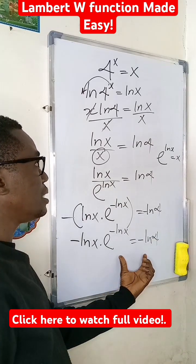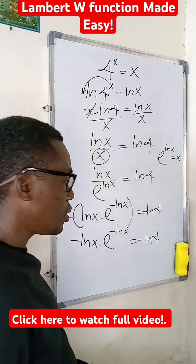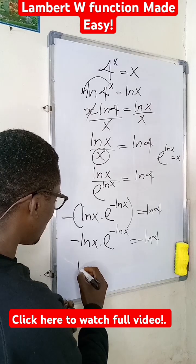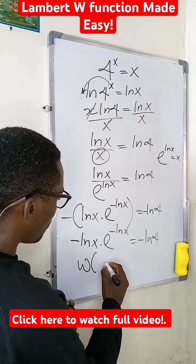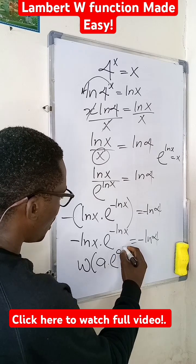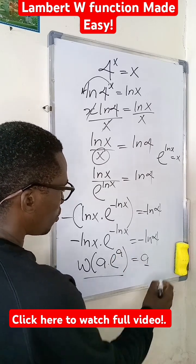Now, the reason why I did this is to be able to apply the Lambert W function. What does the Lambert W function say? It says if I have a multiplied by e to the power of a, I can use Lambert W to solve for a.